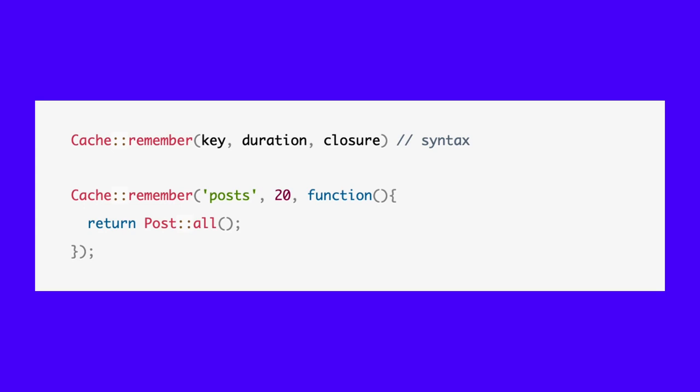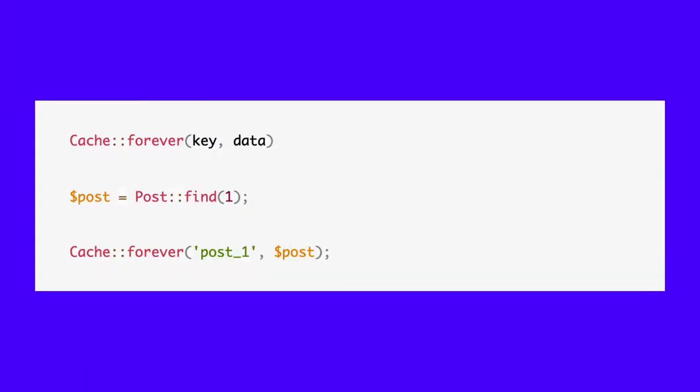The putMany method stores an array of data in the cache at once with the same duration. It accepts two parameters: data and seconds. The cache remember method is another excellent way to implement the cache aside strategy. It accepts three parameters: a key, seconds, and a closure used to retrieve data from the database if not found. Laravel Cache also has the cache rememberForever method, which does not accept the seconds parameter and stores the data forever. You can implement it with the following code.